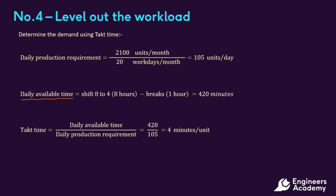Our daily available time needs to be calculated next, and we get this from our shift time minus the breaks. Our shift time of 8 hours minus 1 hour for breaks gives us 7 hours, times 60 minutes, which is 420 minutes. Our total takt time is the daily available time divided by the daily production requirement, which equates to 420 minutes divided by 105 units per day.